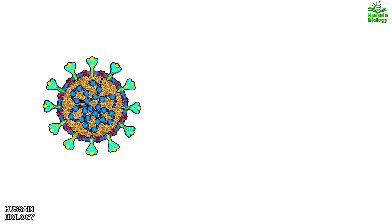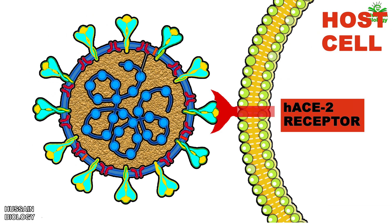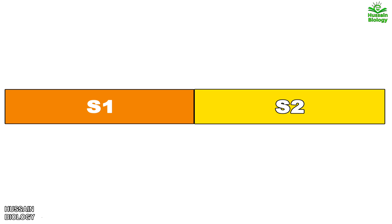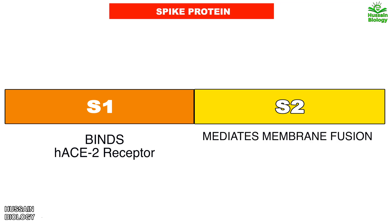Briefly, the S protein acts as a ligand for the ACE2 receptor. Any change in the spike protein will lead to its increased or decreased binding affinity with the host cell. If we see the molecular structure of the S protein, we have the S1 and S2 regions. The S1 binds the ACE2 receptor while the S2 mediates membrane fusion — that means S1 is for attachment and S2 is for fusion.